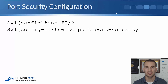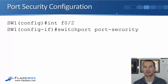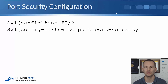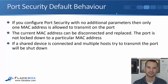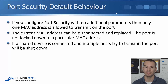To configure this, it's very simple if you don't add any additional parameters. It's configured at the interface level: interface FastEthernet 0/2, then switchport port-security. Typically you would enable this on all ports on your switch, not just one. If you configure port security with no additional parameters, then only one MAC address is allowed to transmit on the port by default.